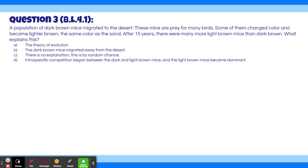Question 3. A population of dark brown mice migrated to the desert. These mice are prey for many birds. Some of them changed color and became lighter brown, the same color as the sand. After 15 years, there were many more light brown mice than dark brown. What explains this? A, the theory of evolution. B, the dark brown mice migrated away from the desert. C, there is no explanation — this is by random chance. Or D, intraspecific competition began between the dark and light brown mice, and the light brown mice became dominant.